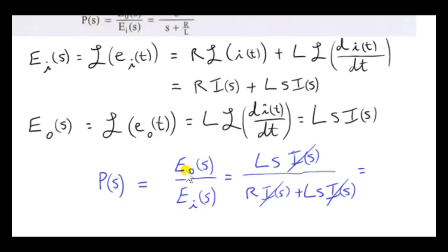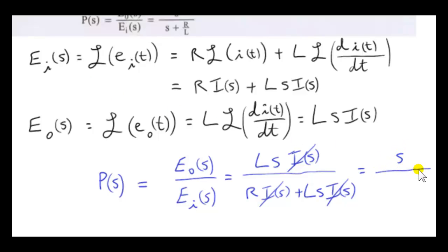Now we can write down the transfer function — the Laplace transform of the output divided by the Laplace transform of the input. When we cancel I of S and divide above and below by L, the top gives S, and the bottom gives R over L plus S. That's exactly what we had to show.